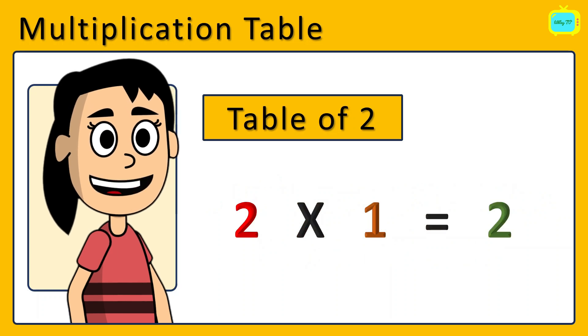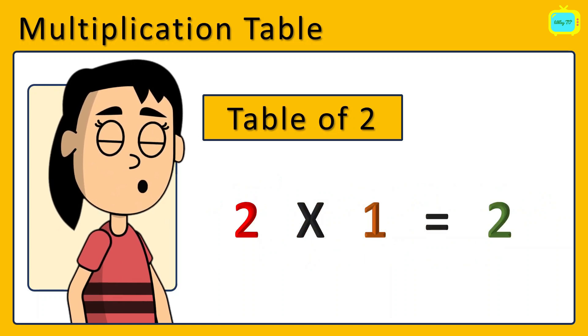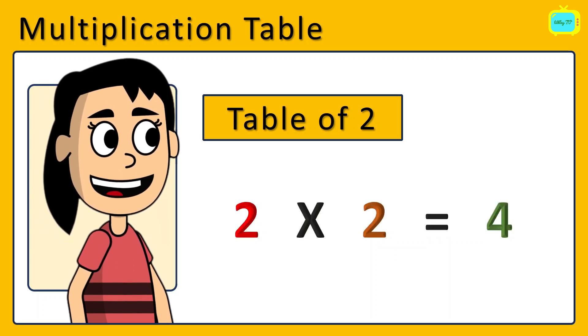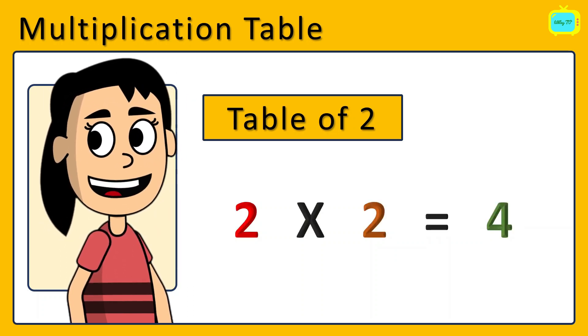2 times 1 is 2. 2 times 1 is 2. 2 times 2 are 4. 2 times 2 are 4.